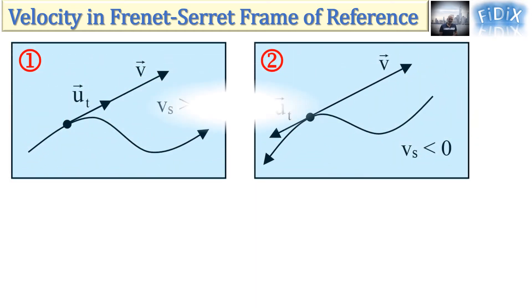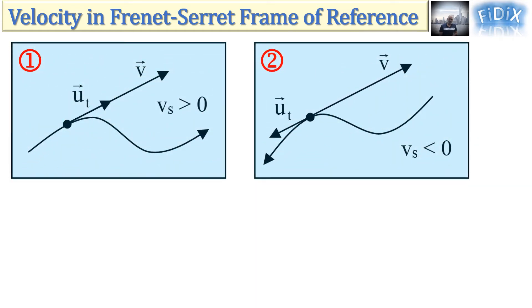For this purpose, we will choose the example of a moving particle having a curvilinear trajectory as shown in figures 1 and 2. In figure 1, the trajectory is oriented from left to right, while in figure 2, it is oriented from right to left.